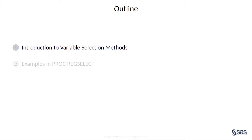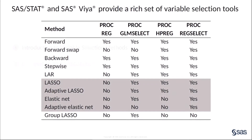Let's get started with the variable selection methods. In general, there are two kinds of variable selection methods for linear models: sequential selection methods and penalized regression methods. Sequential selection methods provide systematic ways to search through models and fit a sequence of regression models. You can find most of the popular sequential selection methods in SAS procedures, including forward selection, forward swap, backward elimination, and stepwise selection.